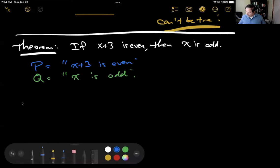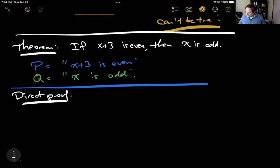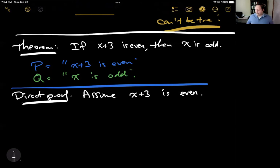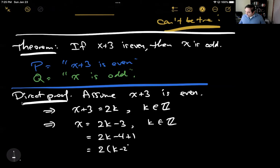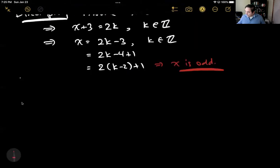Now if we try to prove this three ways, let's start with the direct proof. I assume x plus 3 is even. The proof strategy for the direct proof is: assume P, then do some logic to get Q. If x plus 3 is even, it means x plus 3 equals 2k for some integer k, which after a little algebra means x equals 2k minus 3. I can write this as x equals 2 times (k minus 2) plus 1, which shows x as 2 times an integer plus 1. Therefore x is odd, and we're done. That is the direct proof.